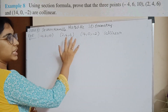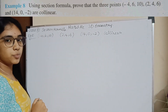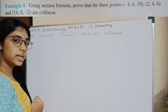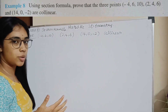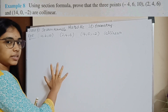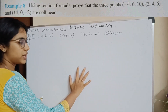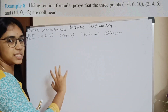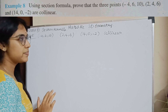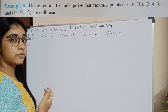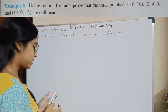Example 8. I am given 3 points and I have to prove if they are collinear. Using the distance formula, we saw that if they lie on the same line, we will have AB plus BC equals AC. So, if the section formula is going to be used, we have to use that method.